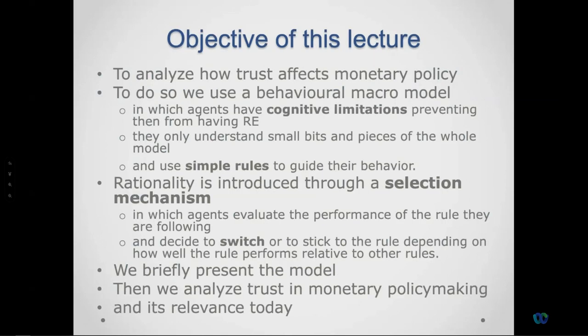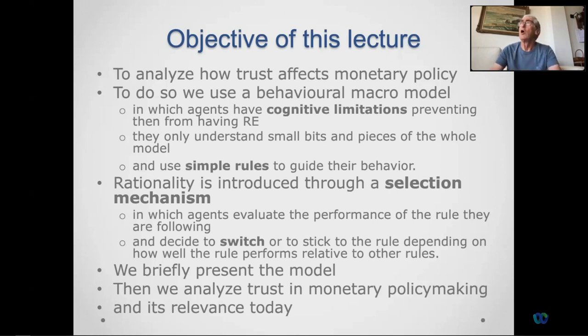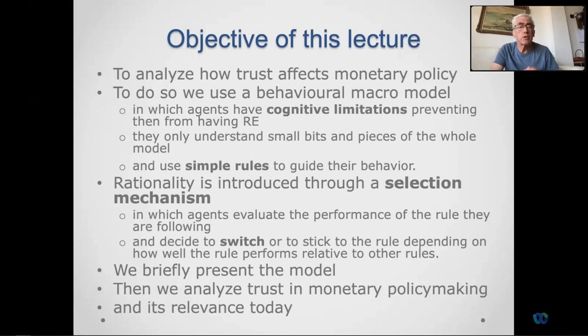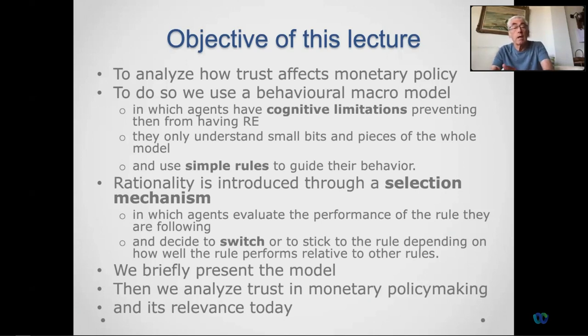I'm going to talk about trust and monetary policy, which I call a behavioral economic approach. I want to analyze how trust affects monetary policy using a behavioral macroeconomic model. Its main characteristics are that agents have cognitive limitations preventing rational expectations. They understand small bits and pieces of the whole model and as a result use simple rules to guide their behavior. Rationality is introduced via selection mechanisms.